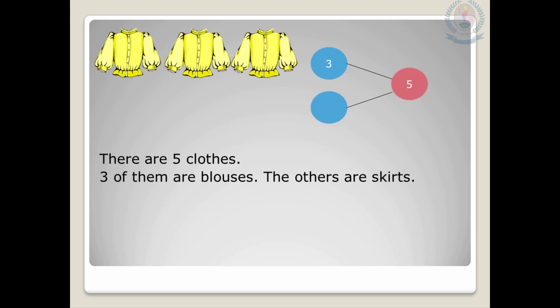From three to five, I am going to draw a bridge. Now from three, you have to count until you get five. For each count you have to draw a line. Start from three — not from zero, from three. After three: four, five. Now you got the answer five. How many lines did we draw? We drew two lines. That means our other part is two.